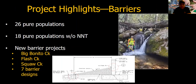Barriers, including natural waterfalls and constructed drop structures, are used to keep non-native trout species separate from upstream recovery habitats of Apache trout. There are currently 26 pure populations of Apache trout protected by natural or artificial barriers, 18 of which are free of non-native trout. We continue to work towards protecting all pure populations with functional barriers. We're planning to construct a new barrier on Big Benito Creek during 2022, and we have funding for new barriers on Flash and Squaw Creeks. We also recently received proposals for designing seven additional barriers on Apache trout recovery streams.